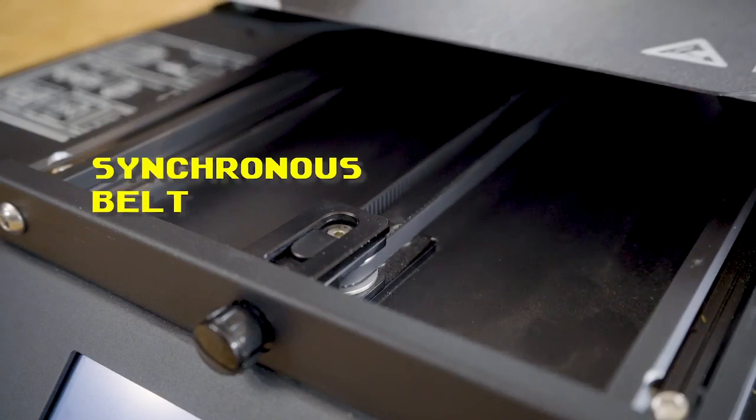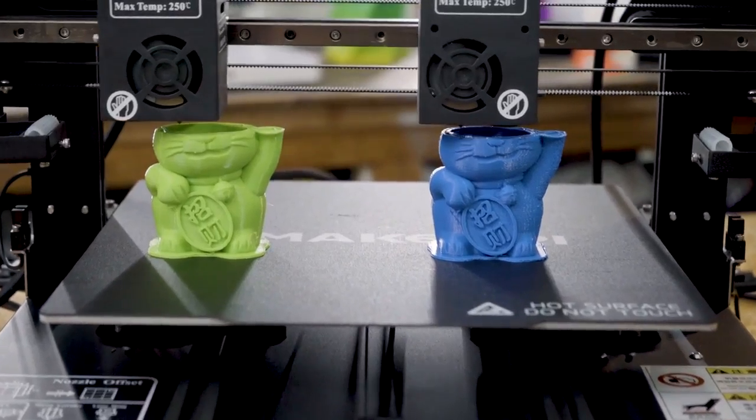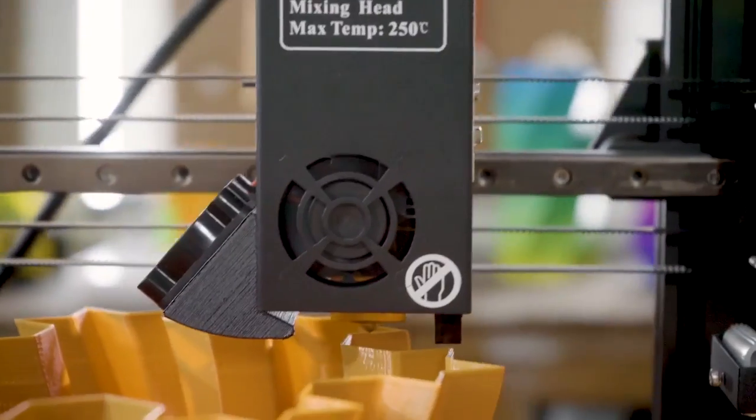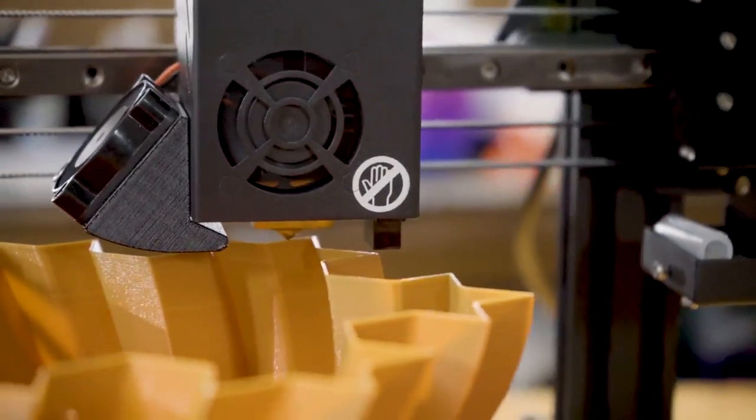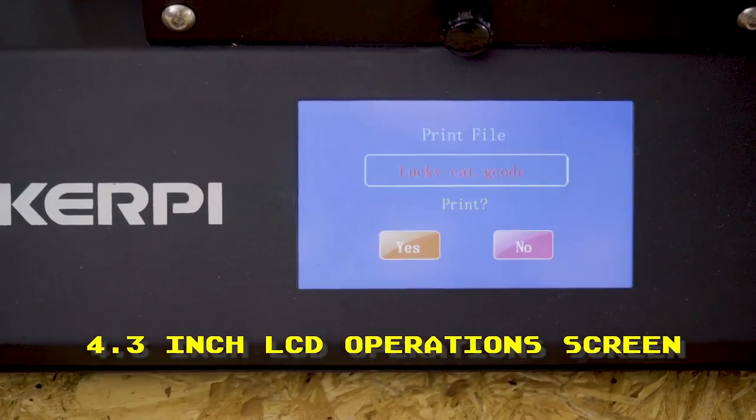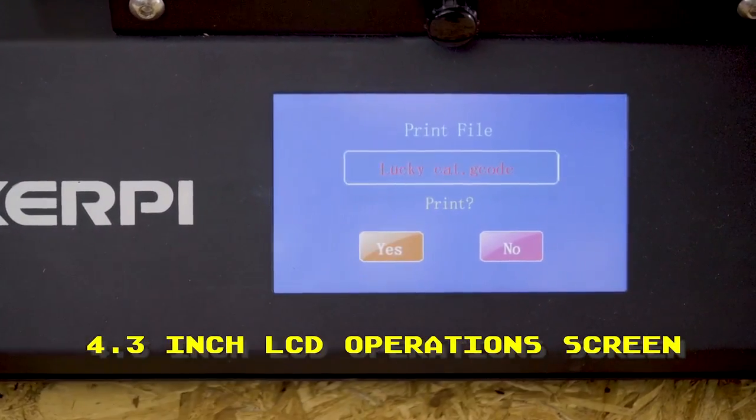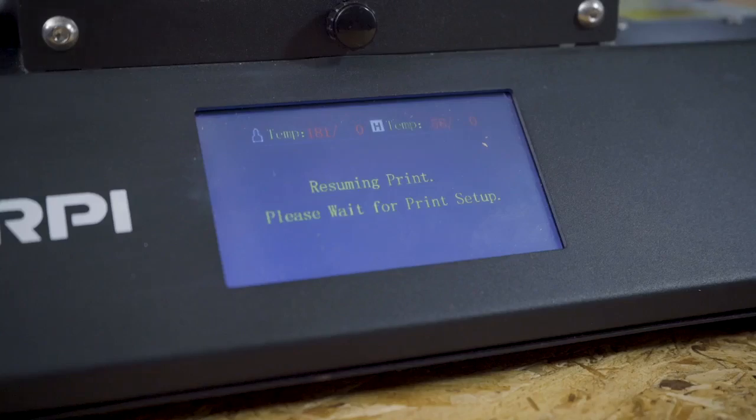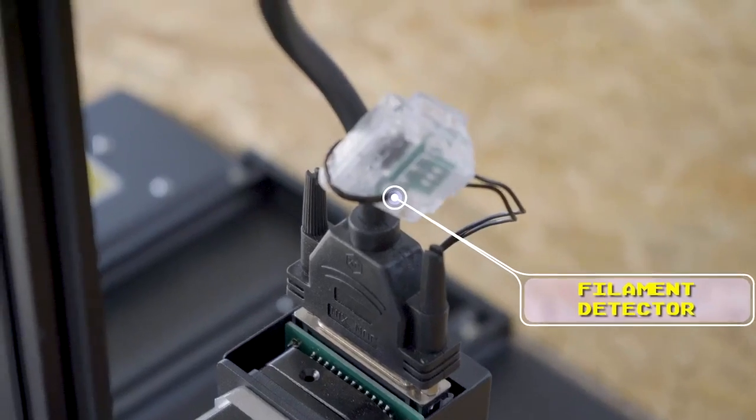It has an adjustable synchronous belt for stable printing and engraving performance, and a hardened steel extruder nozzle with temperatures up to 300 degrees. A bright 4.3-inch LCD touchscreen for easy operation, power outage print resume, and filament outage detection.